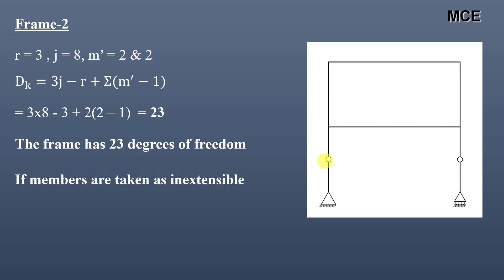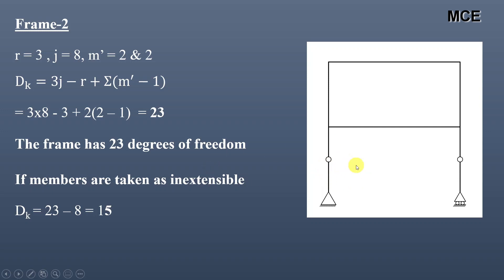If members are taken as inextensible, the value of DK will be reduced by the number of members. Always remember that if a member has 1 internal hinge, that inextensible member will be counted as 2 members. Here, this member has 1 internal hinge, so it will be counted as 2 inextensible members. The total inextensible members this frame has is 8, so DK = 23 − 8 = 15.